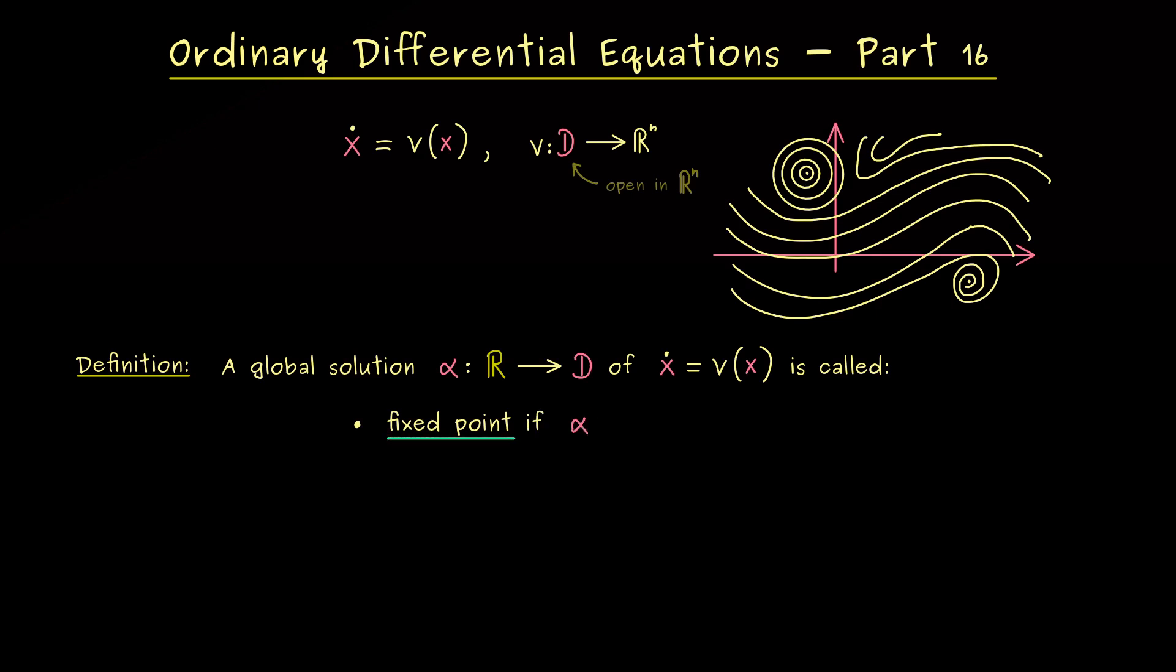Hence by definition we have that alpha of t is equal to alpha of zero. And obviously this holds for all t then. And you should see this happens exactly at the point in D where v of this point is equal to zero. Therefore often this point in a domain is also called fixed point. Indeed the differential equation tells us if we start at that point we can stay at that point as long as we want. Hence you can remember a fixed point is always a global solution.